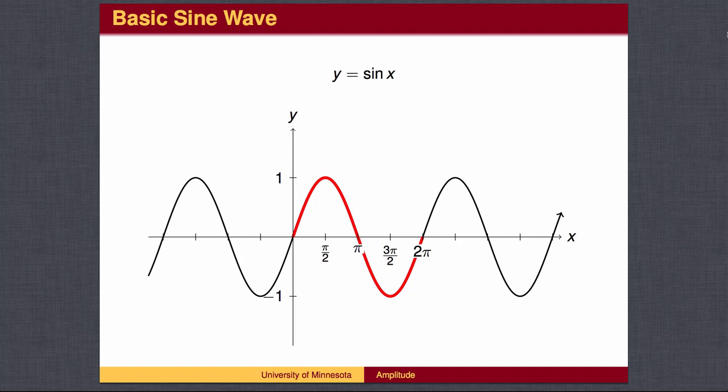The red wave here goes through the pattern middle, top, middle, bottom, middle, from 0 to 2 pi. The wave then repeats this pattern from 2 pi to 4 pi, then repeats again and again, both to the left and to the right.